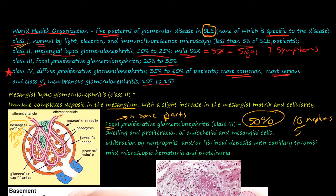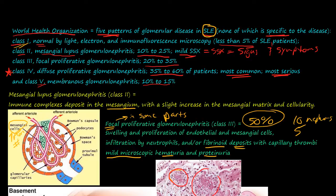You see infiltration of the neutrophils, which are coming in to respond to those immune complexes embedded there. You see a fibrinoid deposit with capillary thrombi, and you see mild microscopic hematuria and proteinuria — protein and blood in the urine. You can see spots developing here where necrosis is starting and there are swellings, all inside the glomerulus.